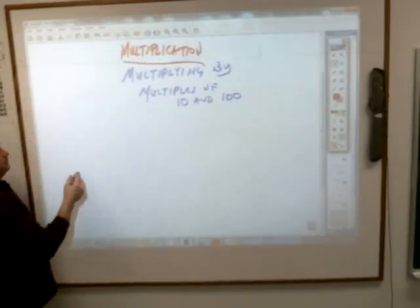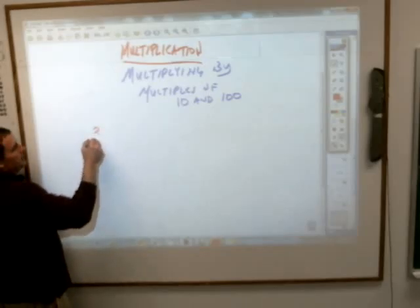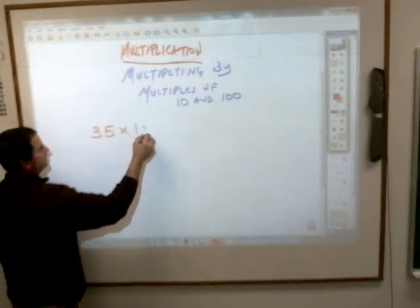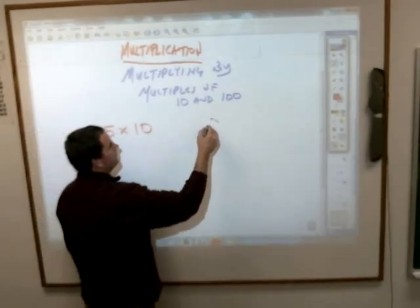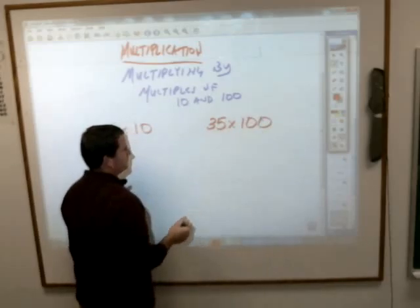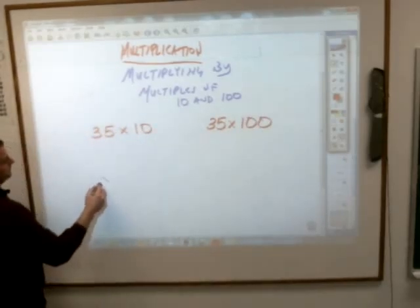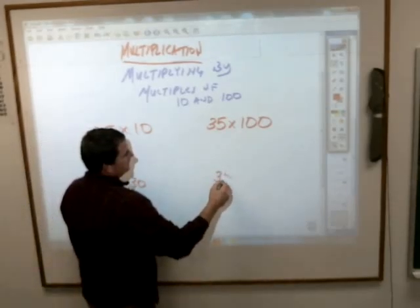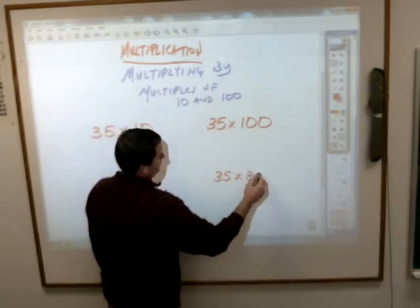In other words, if you have something like this: let's say 35 times 10, 35 times 100, and then maybe 35 times 30, and 35 times 300, just for fun.